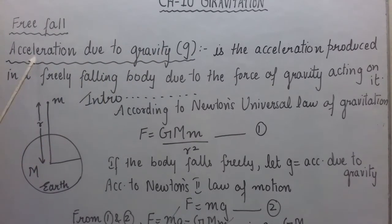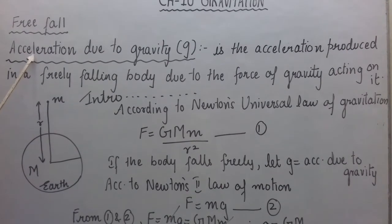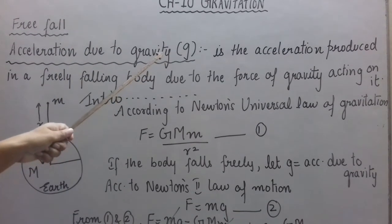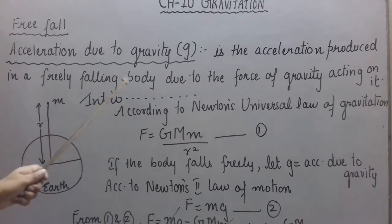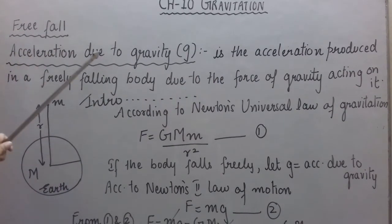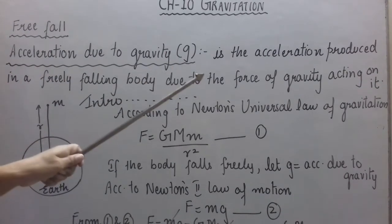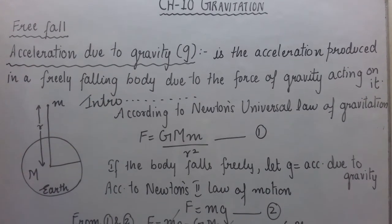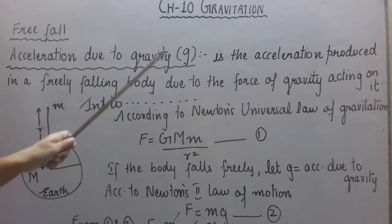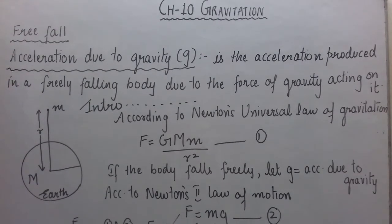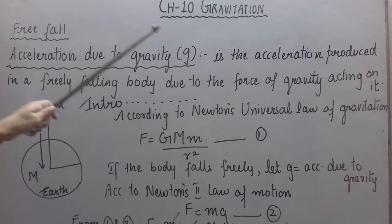Unlike other accelerations which are generally denoted by small a, this acceleration due to gravity is represented by small g. It is the acceleration produced in a freely falling body due to the force of gravity acting on it. So acceleration due to gravity, as the name suggests, is produced only due to the force of gravity, and applies to freely falling bodies. Now let us see the relation between small g and capital G. Capital G is the universal gravitational constant, and we will derive an expression for small g.